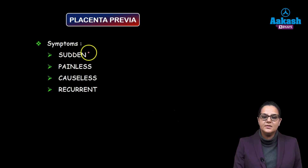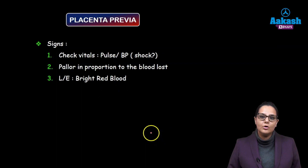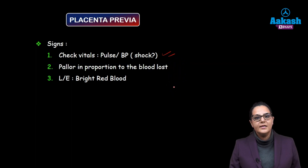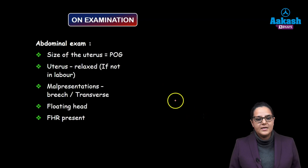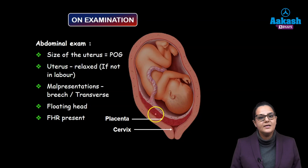What are the symptoms? There will be sudden, painless, causeless, and recurrent bleeding. When the patient comes to us, we always go for the general examination followed by the local examination. In the general examination, we check her vitals — pulse and blood pressure. The patient can be in shock, and the pallor will be in proportion to the blood lost. On local examination, she will have bright red blood, indicating fresh bleeding. On abdominal examination, the size of the uterus will be equal to the period of gestation, and the uterus will be relaxed if the patient is not in labor. There can be malpresentation — the baby can be breech or transverse — and a floating head, since the placenta is covering the lower segment. The fetal heart sounds will be present.